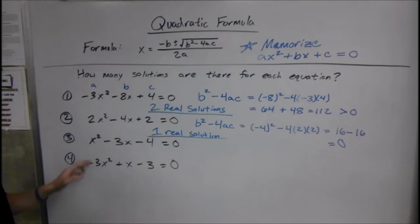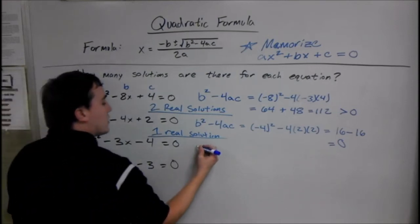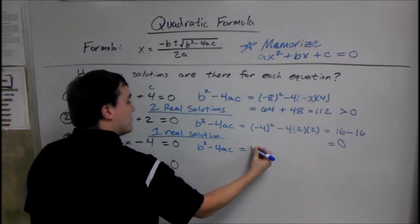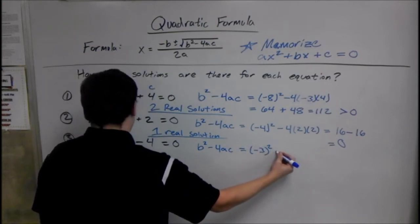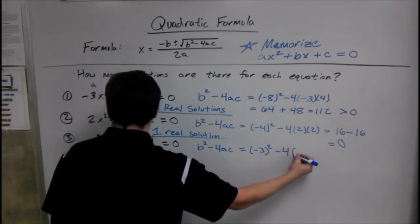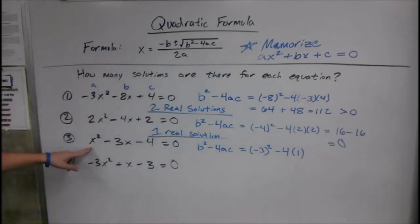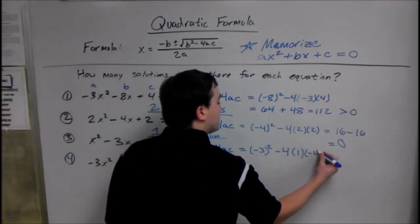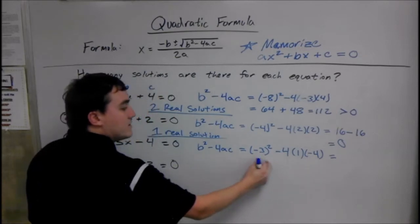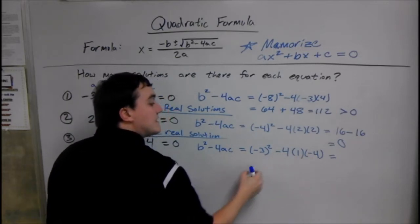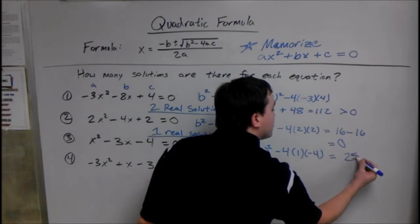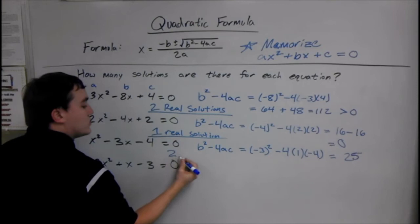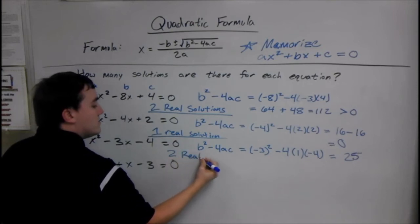For number 3, we plug it in: b squared minus 4ac is negative 3 squared minus 4 times 1 — when there's no number in front, it's 1 — times negative 4. Once we do this, we get 9, and two negatives make it plus 16. 9 plus 16 is 25, which is once again two real solutions.